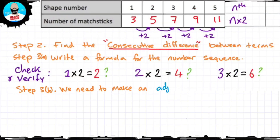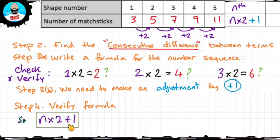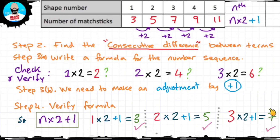Step 3b: we need to make an adjustment to our formula. And the adjustment is plus 1. Step 4, we're going to verify our formula. n times 2 plus 1: the first term times 2 plus 1 gives us 3 — perfect, that's what we need. The second term times 2 plus 1 gives us 5 — exactly what we need. The third term times 2 plus 1 gives us 7, and that's exactly what we need.